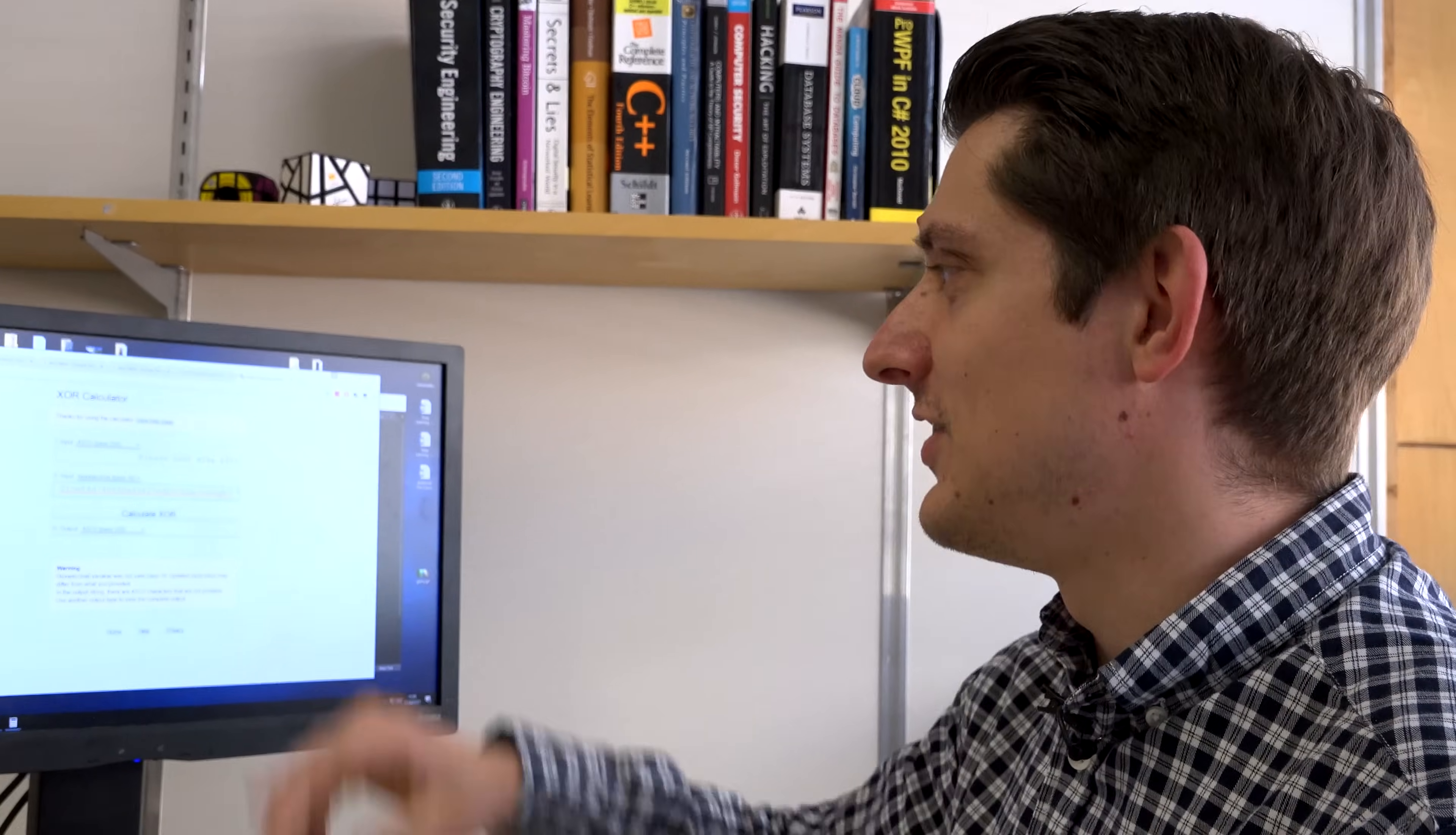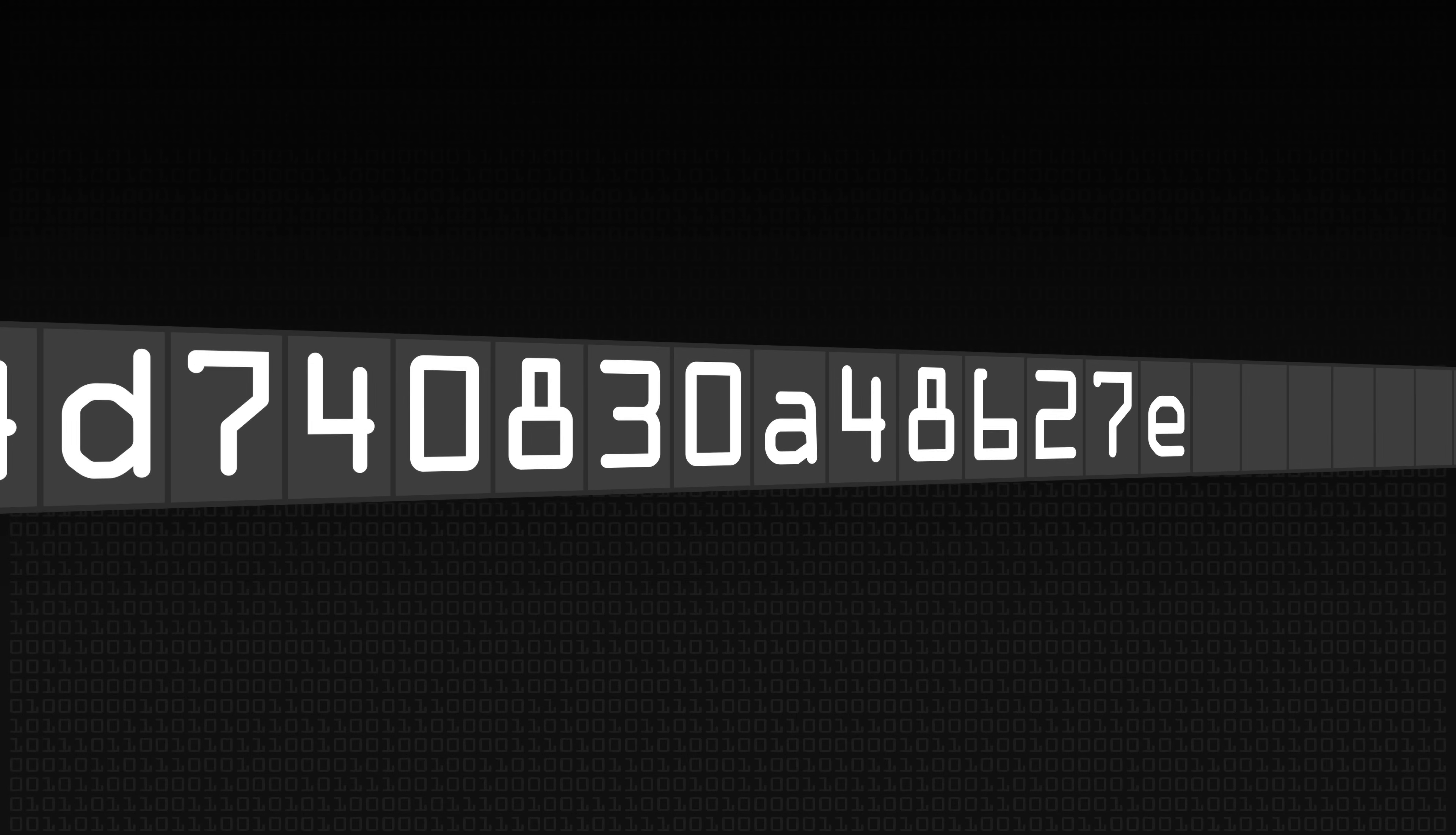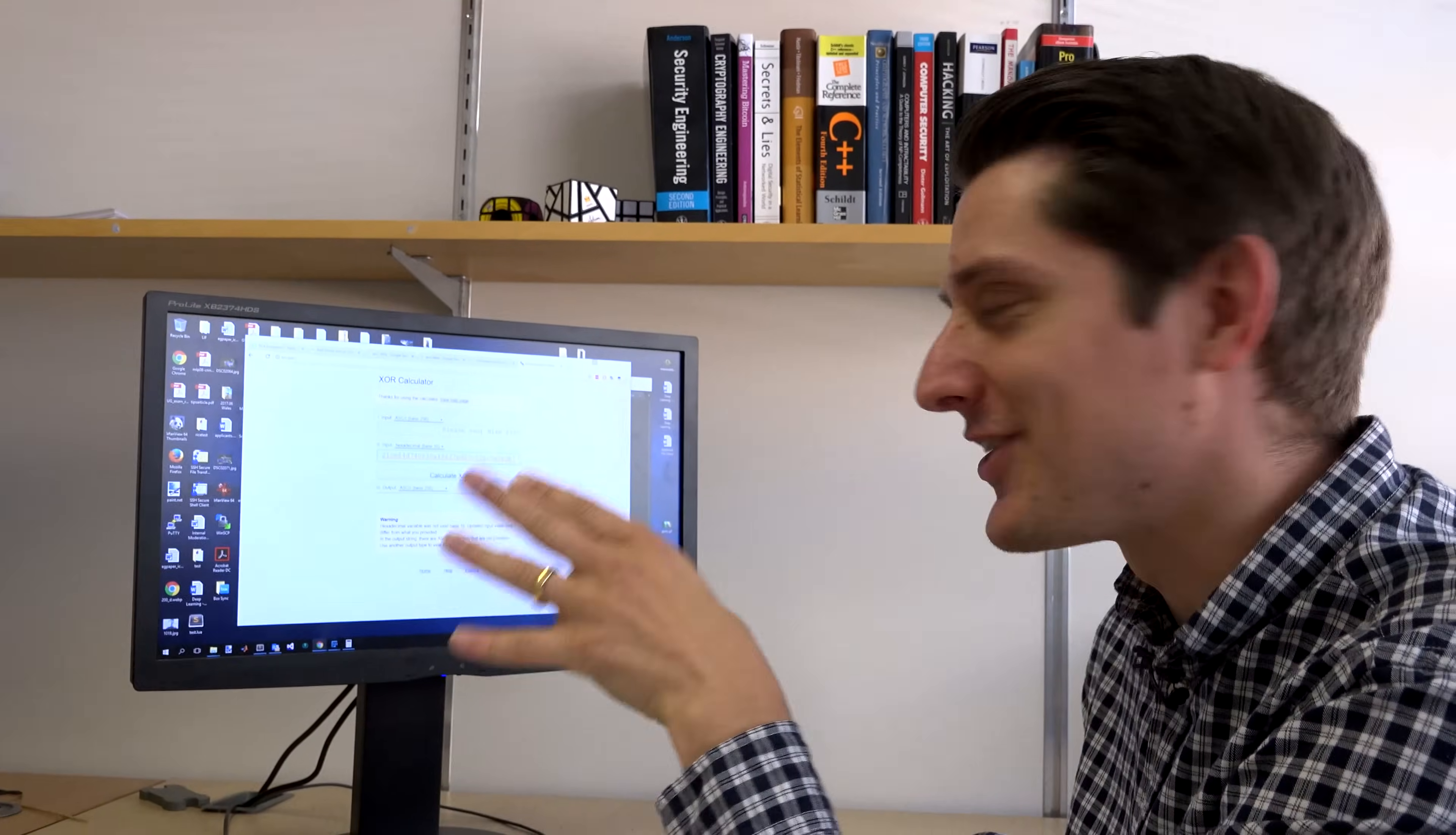Where did that keystream come from? Well, I actually generated it by just putting random nonsense into another stream cipher. You could generate this any way you like. It has to appear random. If it's not random then you're in real trouble with a stream cipher. For the sake of this small example, this is just random enough.